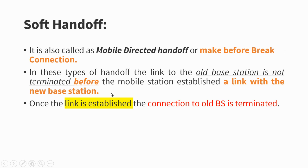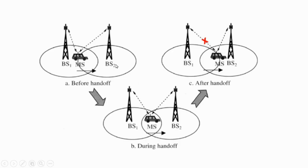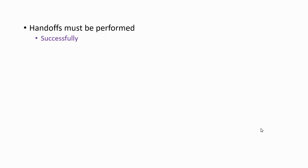Once I get a new channel from the new base station, only then is the previous channel disconnected. Once the new connection is established, the old base station — that is the Matur base station — is terminated after confirming that I have been allocated a new channel from the new base station. So I am traveling from Matur to Angamali, crossing the cell border, and the connection is not terminated; only after the new channel allocation is the old one terminated.